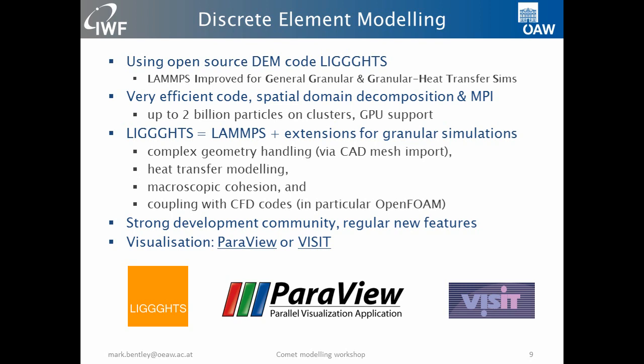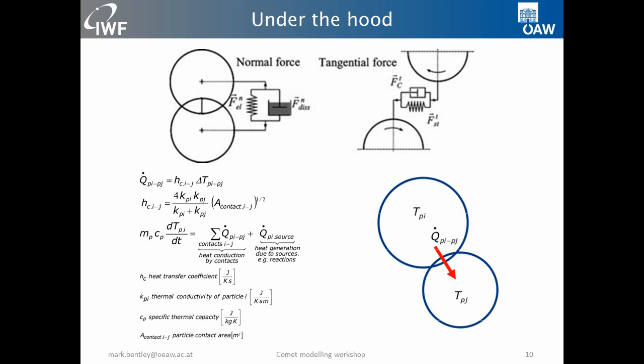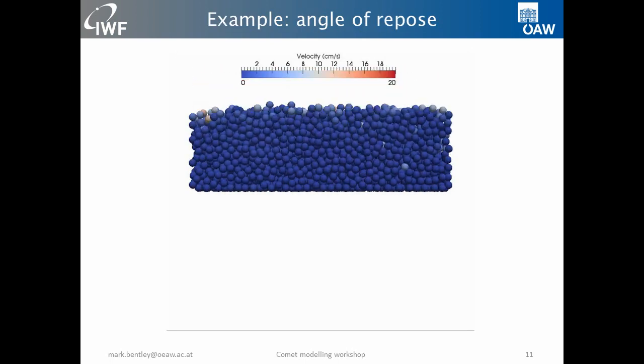The code I'm using is called LIGGGHTS, which is effectively based on a molecular dynamics code that is very well known and understood, and it extends this code for granular particles — more macroscopic particles that are allowed to rotate as well as move — and it accounts for cohesive forces, and you can even include electrostatics if you want to look at particle charging. Under the hood, it's a soft sphere model, meaning particles are allowed to overlap somewhat, and you then account for the repulsive forces, cohesive forces, and heat transfer through the grains according to the degree of overlap and therefore the area available for conduction.